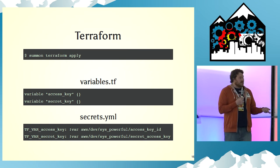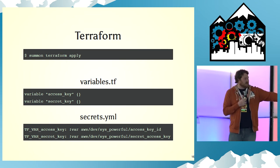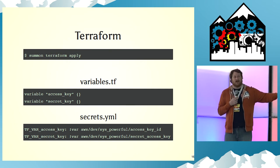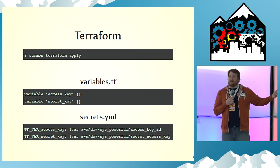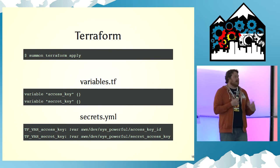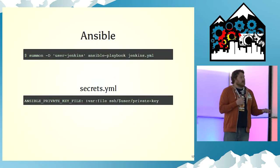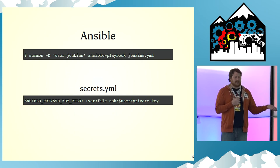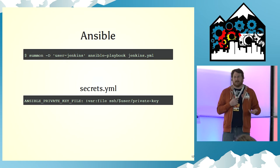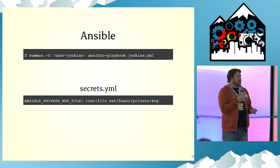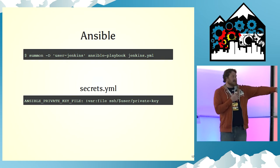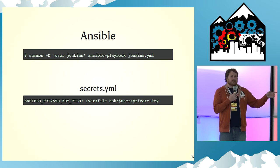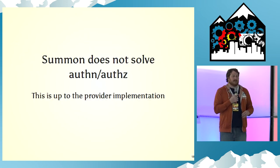I use it with Terraform — there's a little trickery because you have to use the TF_VAR prefix for your environment variables so it resolves the Terraform variables, but that works pretty well. I also use it with Ansible, not just for secrets but for the private key I use to SSH around machines, because I don't want to leave that on my machine. You can also interpolate users, so you can use different users without having to switch your secrets.yaml file.